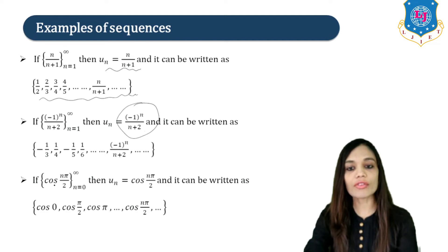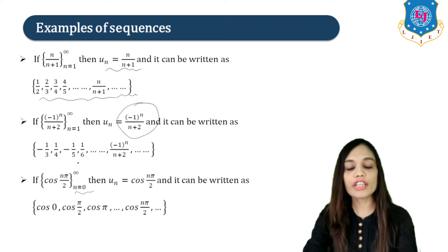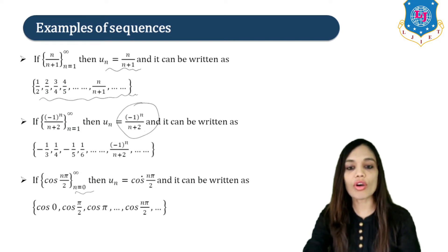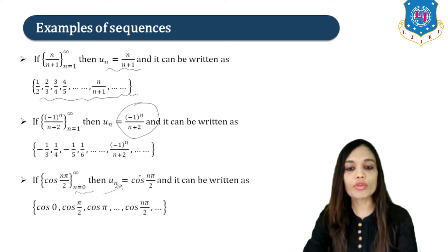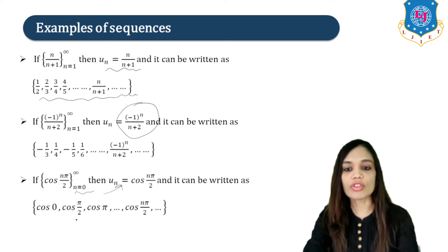Next, let us study the sequence cos(Nπ/2), where N starts from 0 to infinity. The Nth term is cos(Nπ/2). Putting N=0 gives cos(0); putting N=1 gives cos(π/2), and so on. This is the infinite sequence cos(Nπ/2).